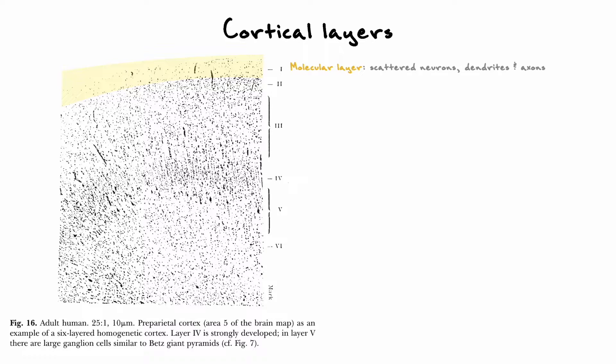The first layer of the neocortex, which is situated closest to the skull, is also known as the molecular layer, and it is mostly composed out of scattered neurons, dendrites of neurons that are in the lower layers, and axons that project to these dendrites.